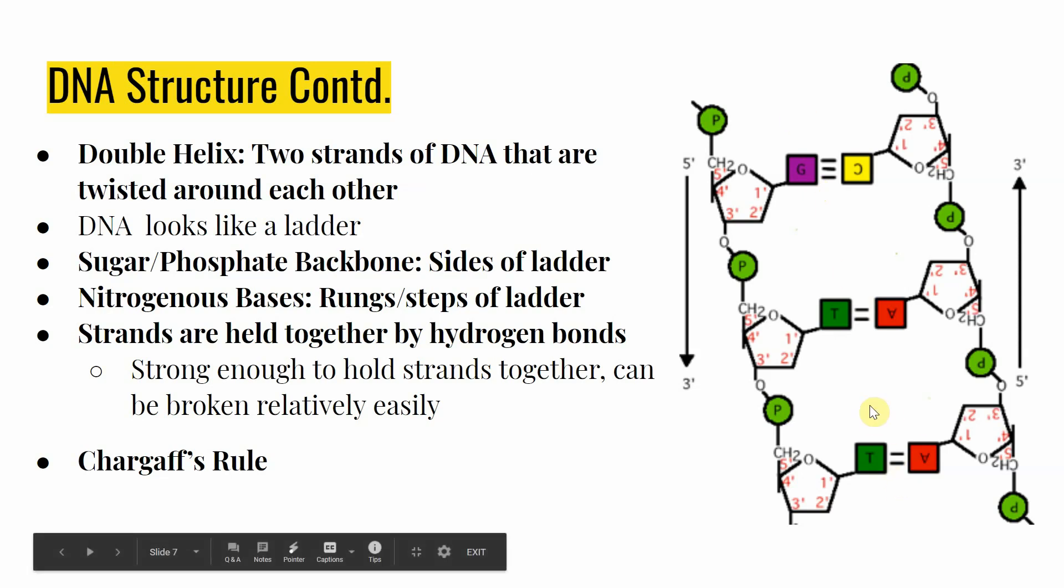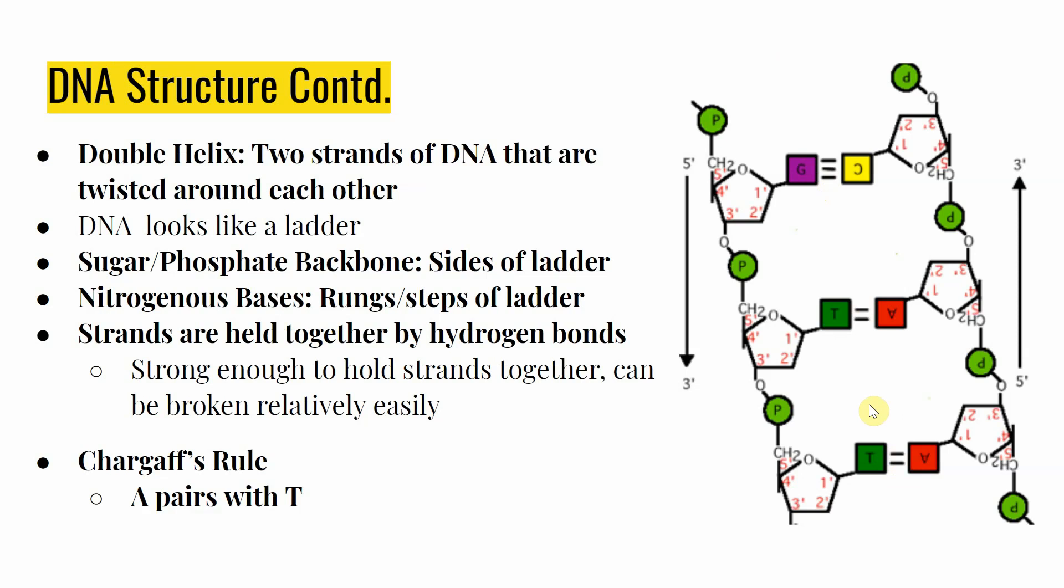What we may notice is that we see kind of a common thing here. If we were to continue the strand, we would see this theme continued. But what Chargaff was able to conclude with his research is that the adenine is always going to pair with a thymine. We're always going to have A bind to T. And we're always going to have our guanine, G, pair with C, cytosine.